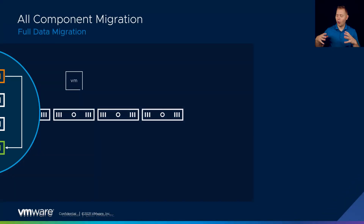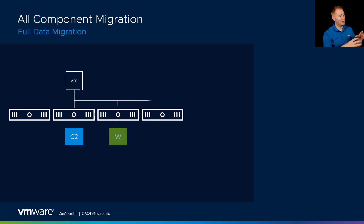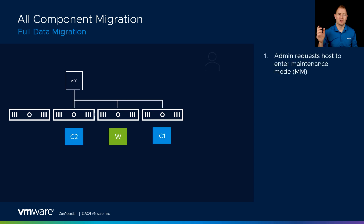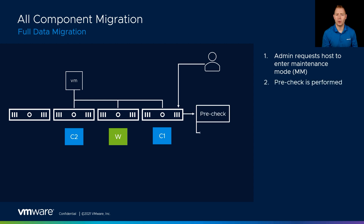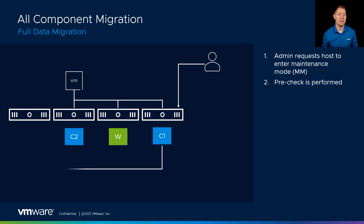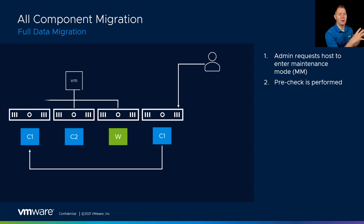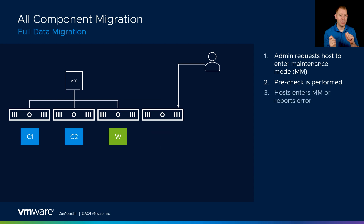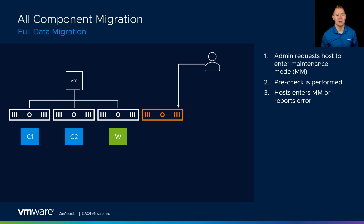Let's start out by talking about full data migration — we're taking all the data that's on one host and copying it over to another host. Our administrator comes along and says they want to put a host in maintenance mode. At that point, the host performs a pre-check to make sure everything is OK and that it can enter maintenance mode with a full data migration. Once those pre-checks complete, we kick off a re-sync to move all that data from one host over to another. Once that re-sync completes, we cut over — our VM says it's going to start using this component over here — and that host goes into maintenance mode.